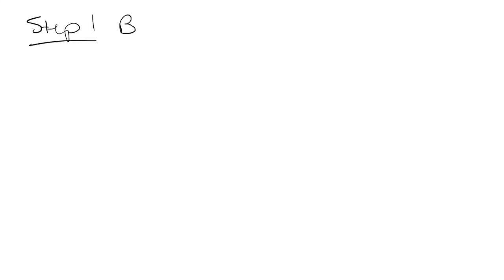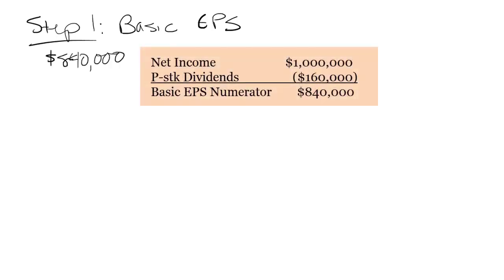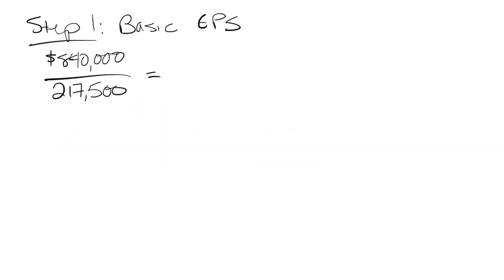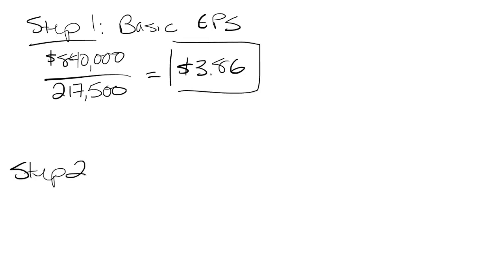Step one is to calculate basic earnings per share — I've already done that from our first example. As a reminder: we had $840,000 of net income minus preferred stock dividends in the numerator, and 217,500 as our weighted average shares outstanding in the denominator, giving us basic EPS of $3.86 per share.